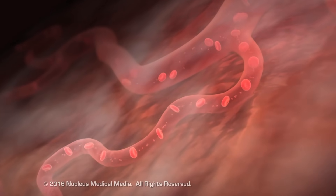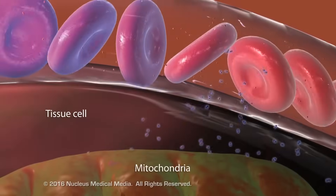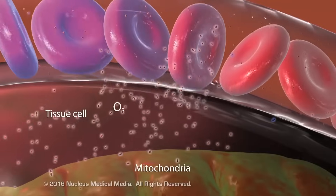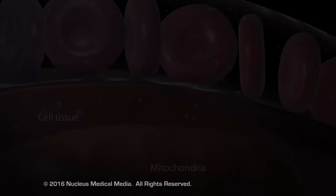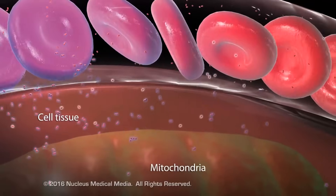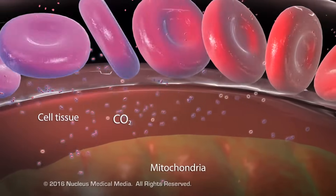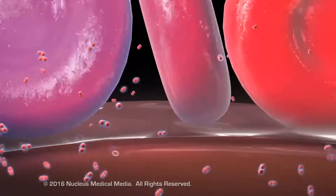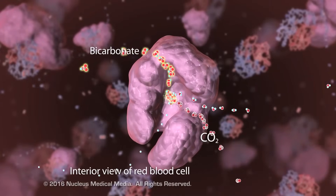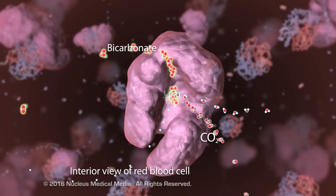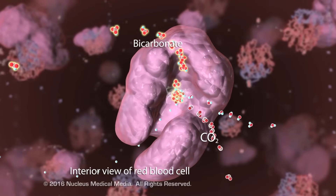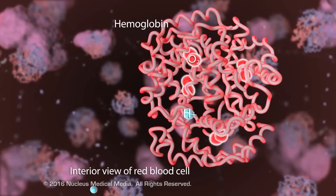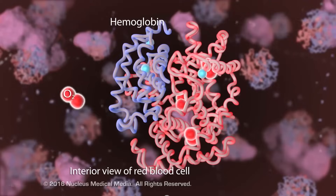Dissolved and bound oxygen flows through the arterial bloodstream to capillaries within tissues. Upon arrival, carbon dioxide loading of the erythrocyte promotes oxygen unloading. Oxygen metabolism within cells produces carbon dioxide gas as a metabolic waste. Carbon dioxide exits the cells and tissues and is converted into bicarbonate within the erythrocytes. This conversion releases hydrogen ions that decrease oxygen affinity for hemoglobin, freeing the oxygen to be delivered to tissue cells.